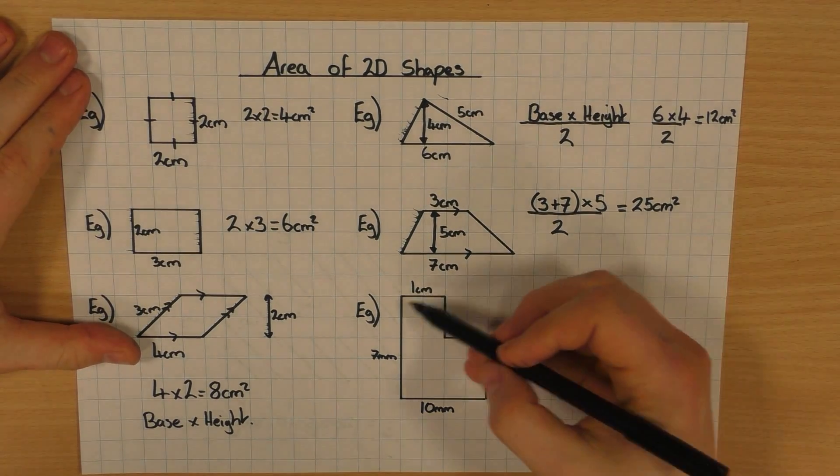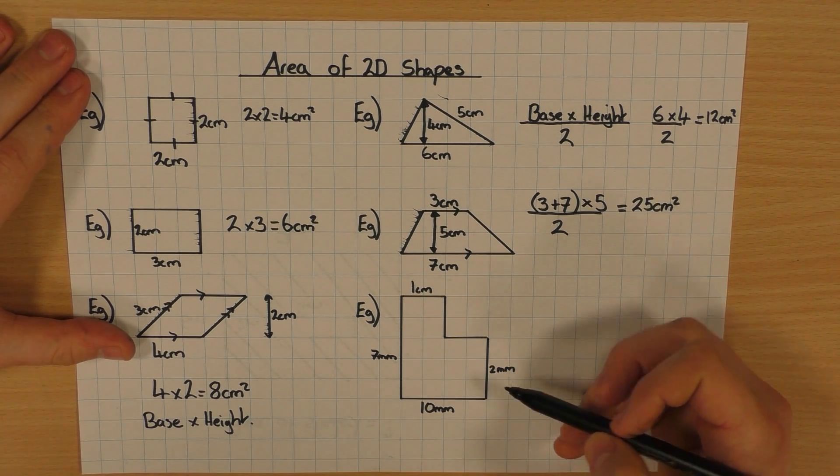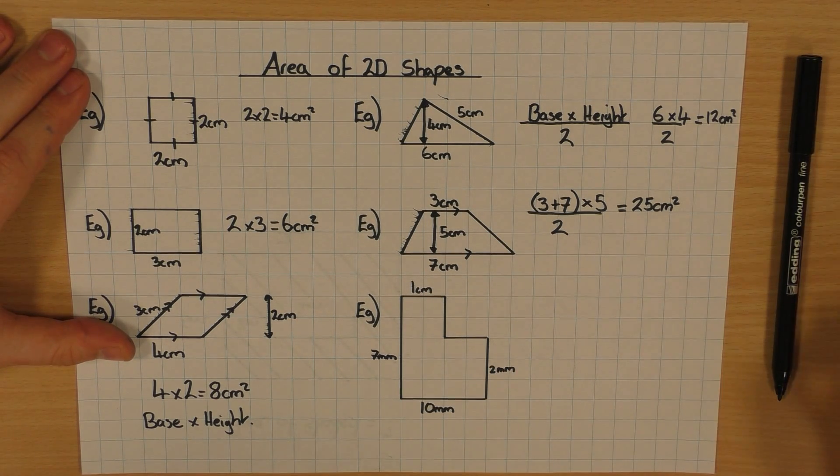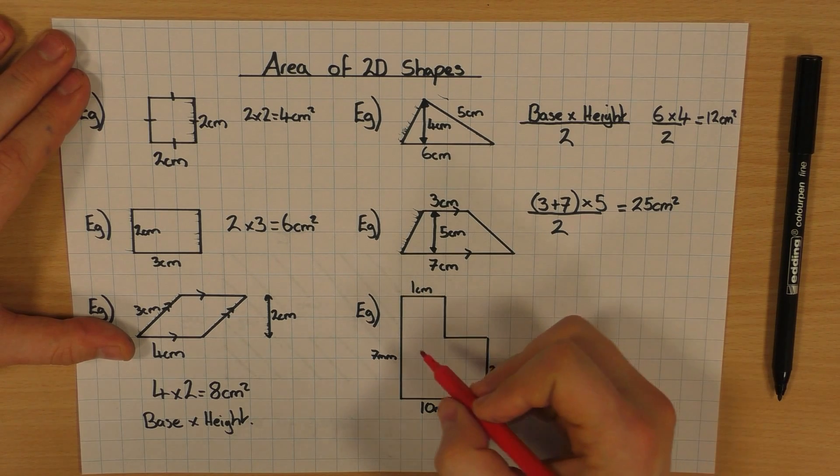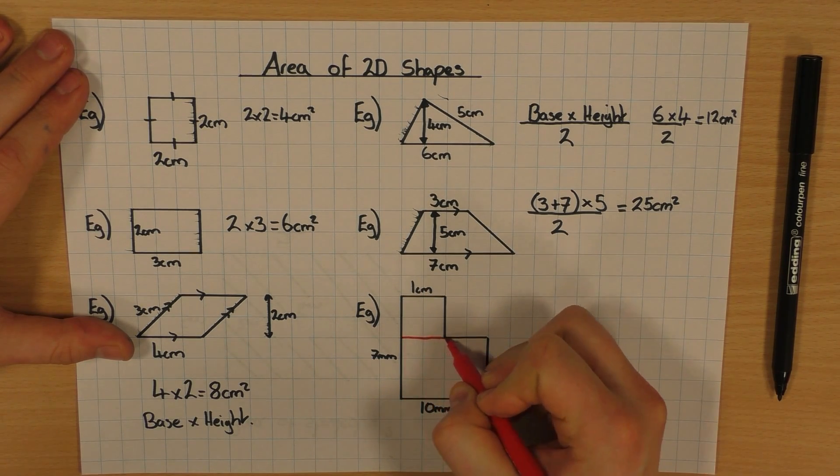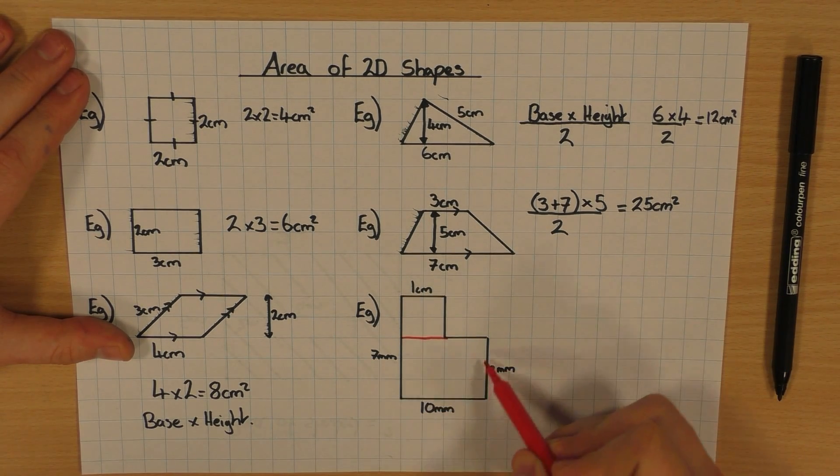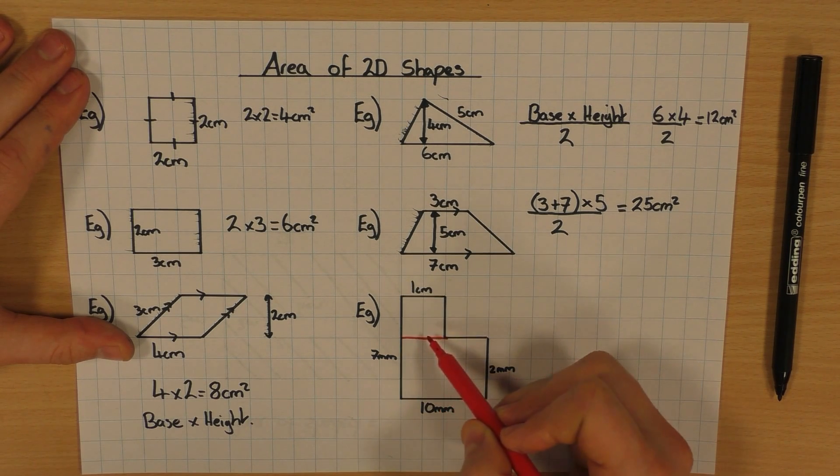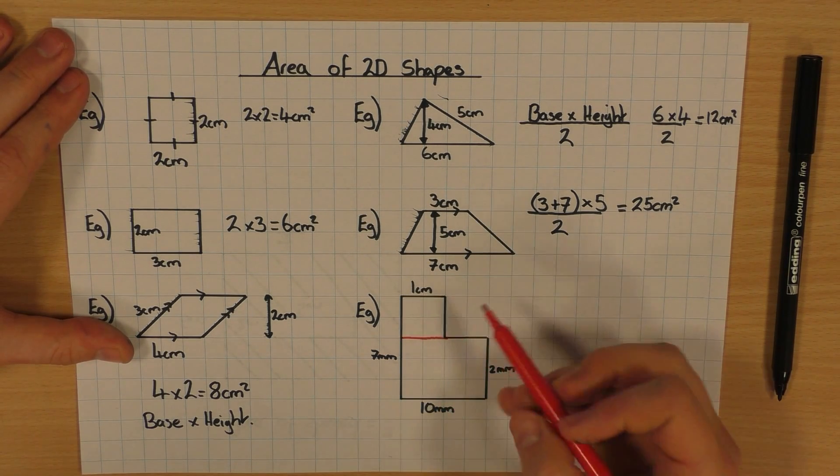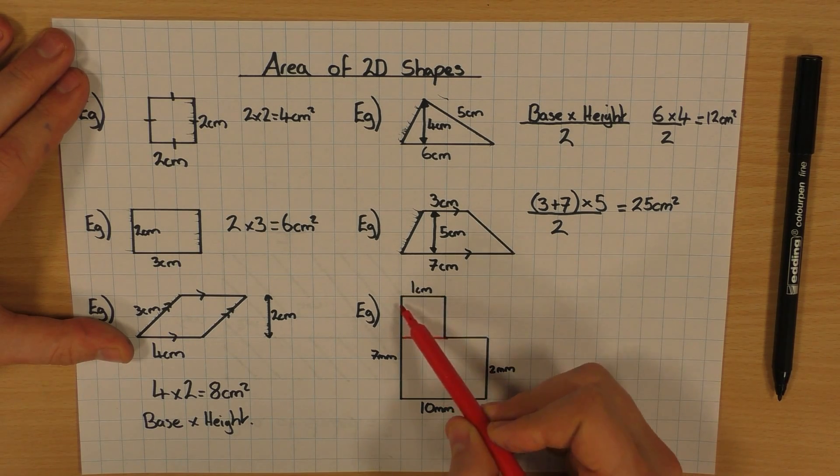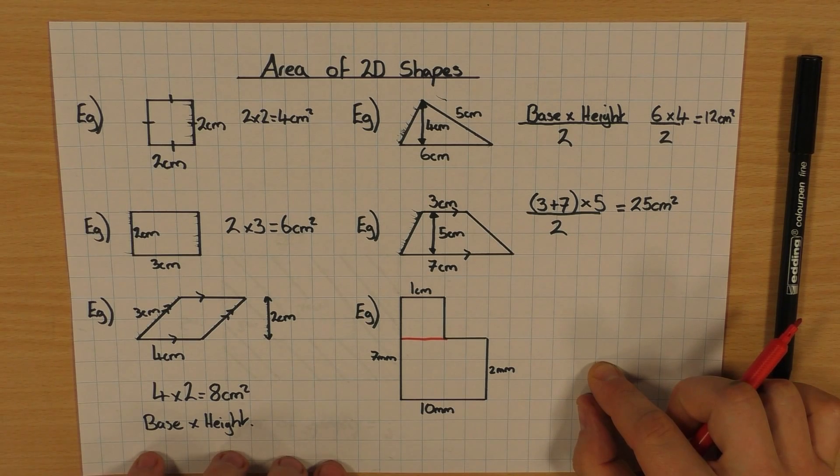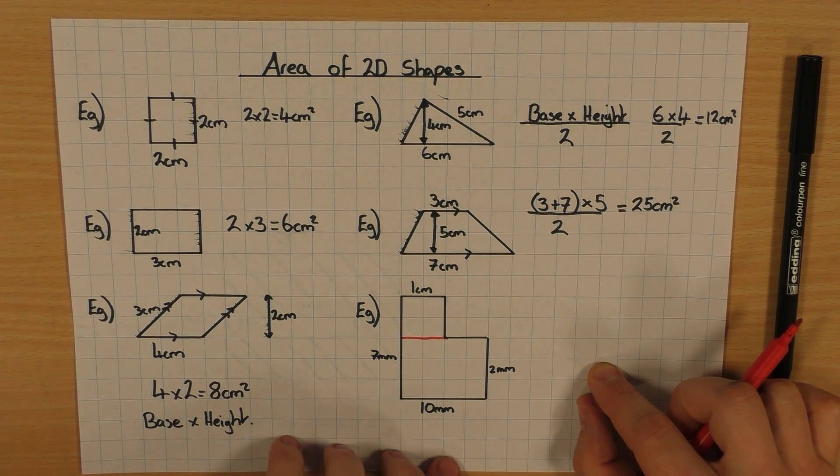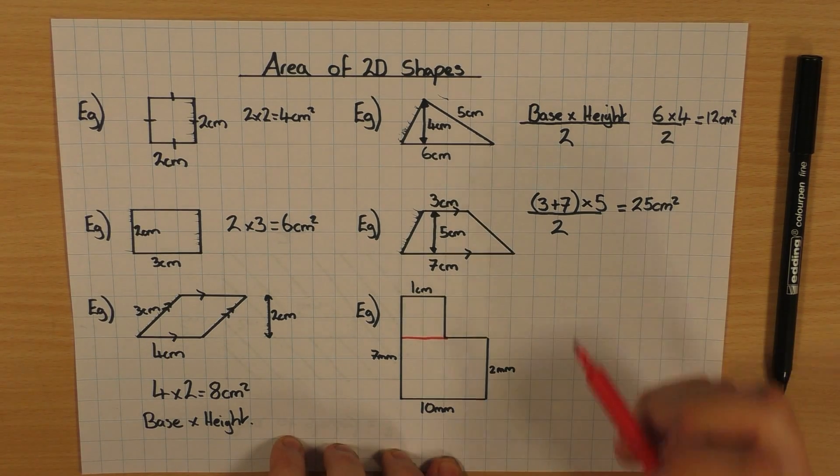So when you have something like this, there's no formula to work out this. So what we do is we split the shape up into shapes that we do know the formulas for. So there's different ways you can do this. I'm going to go this way. I've split this up into a rectangle, and again, I've split this up into a rectangle. Now I know this looks like a square, but don't be put off. That's 1 centimeter, and this is 7 centimeters. This is not drawn to scale. So don't just look at it and think you know what the answer is. Actually look at the lengths they've given you, and work it out.